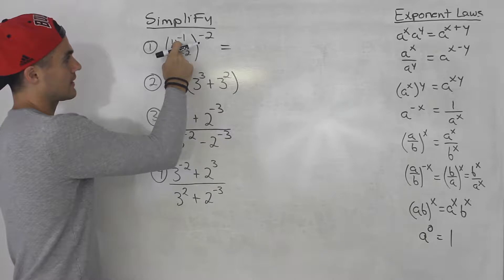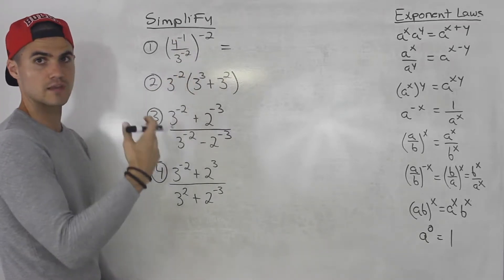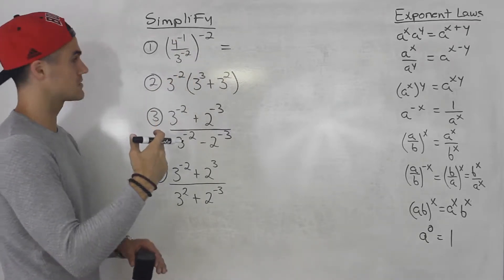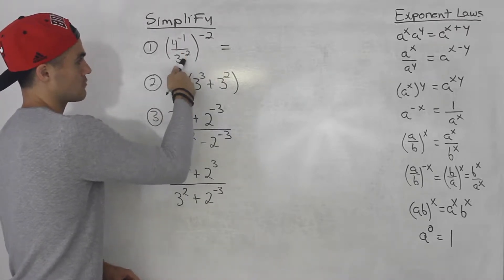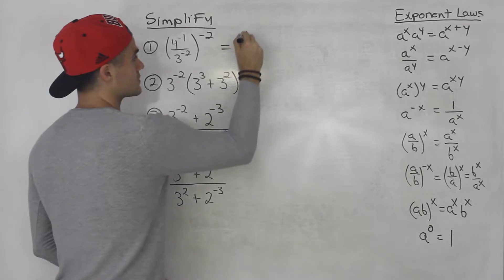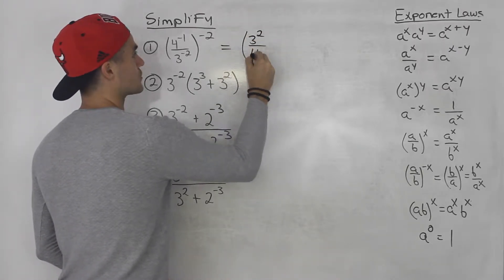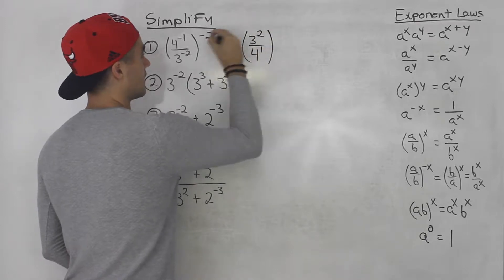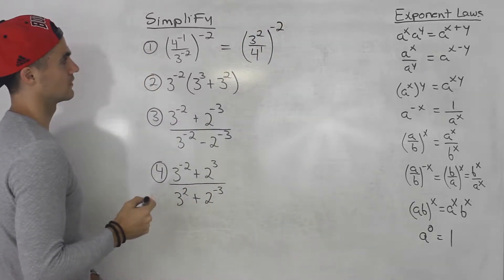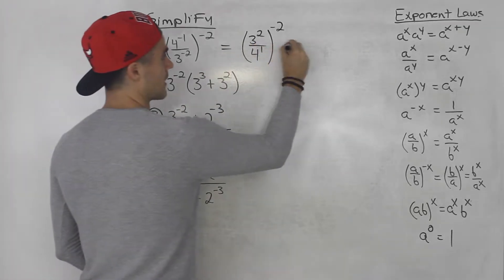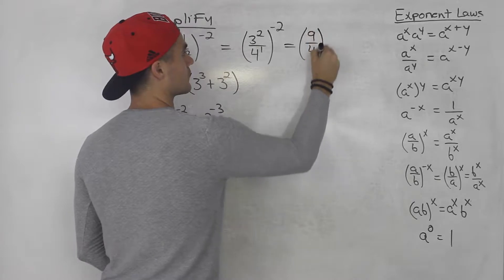So four to the power of negative one over three to the power of negative two. Notice this is a fraction with negative exponents, so we could flip these. Four to the negative one I'm going to bring down, three to the power of negative two I'm going to bring up. So this would end up being three to the power of positive two over four to the power of positive one, and this is still to the power of negative two. Three to the power of two is nine, four to the power of one is four. So this is nine over four to the power of negative two.